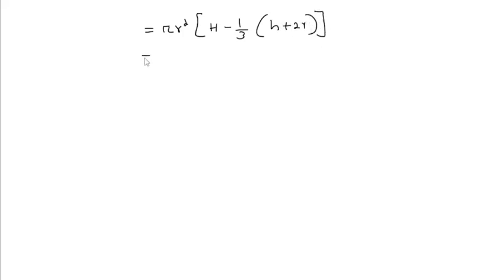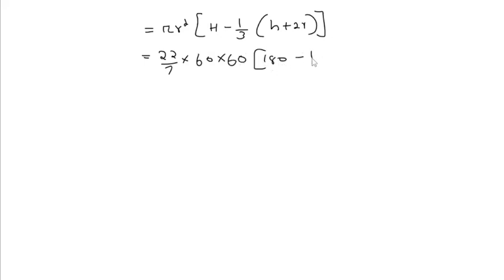Substituting values: pi = 22/7, radius = 60 cm, height of cylinder H = 180 cm, height of cone h = 120 cm, and 2r = 2 × 60 = 120 cm. So we get (22/7) × 60 × 60 × [180 − (1/3)(120 + 120)].